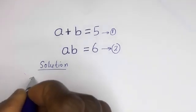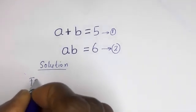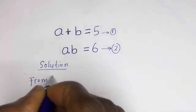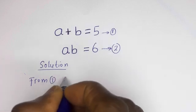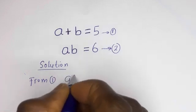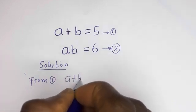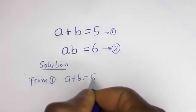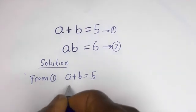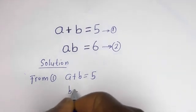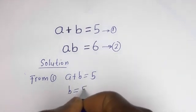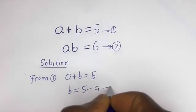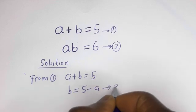Then from equation 1, a plus b is equal to 5, we get b is equal to 5 minus a. Let's call this equation 3.